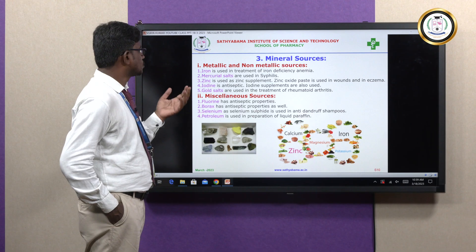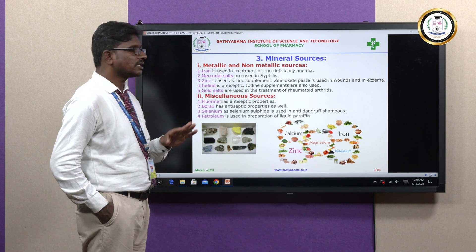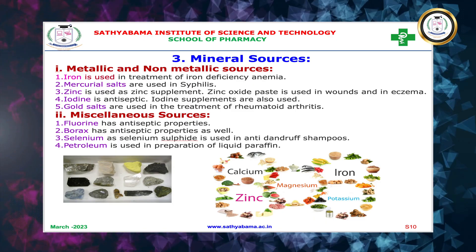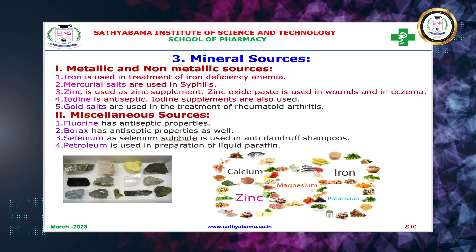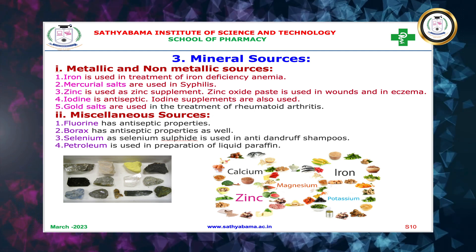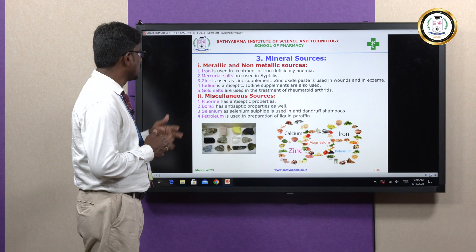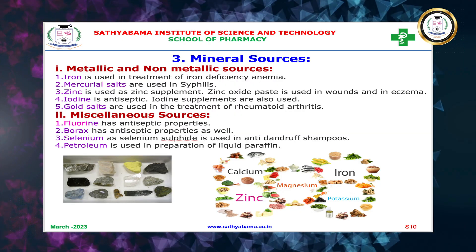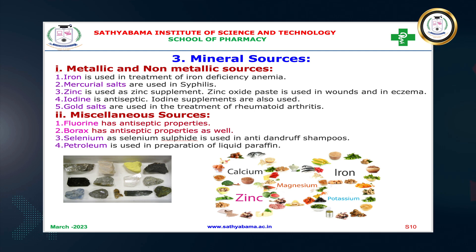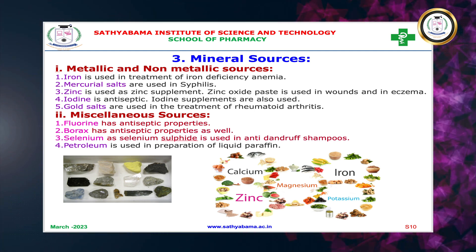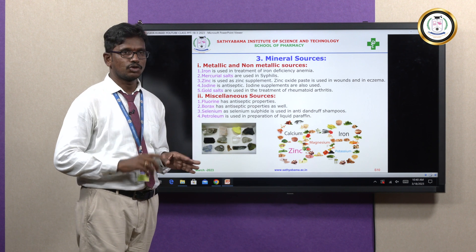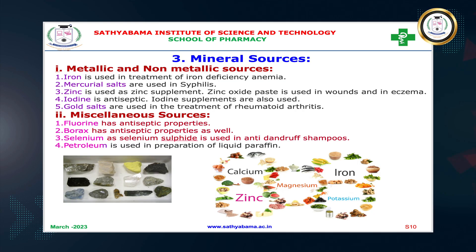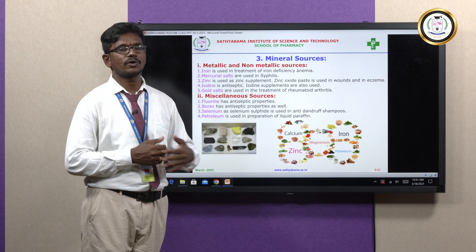Next is mineral sources. Minerals can be classified into two types: metallics and non-metallics. Metallic examples: iron for the treatment of iron deficiency anemia, mercurial salts for the treatment of syphilis, zinc supplements, iodine as an antiseptic and for thyroid conditions, and gold salts for the treatment of rheumatoid arthritis. From miscellaneous sources: fluorine has antiseptic properties, borax has antiseptic properties, selenium sulphide is useful in anti-dandruff shampoos, and petroleum is used in the preparation of liquid paraffin, which also acts as a laxative.